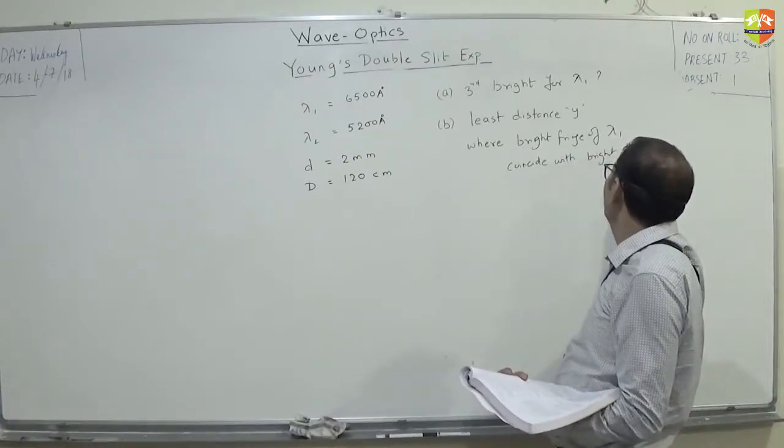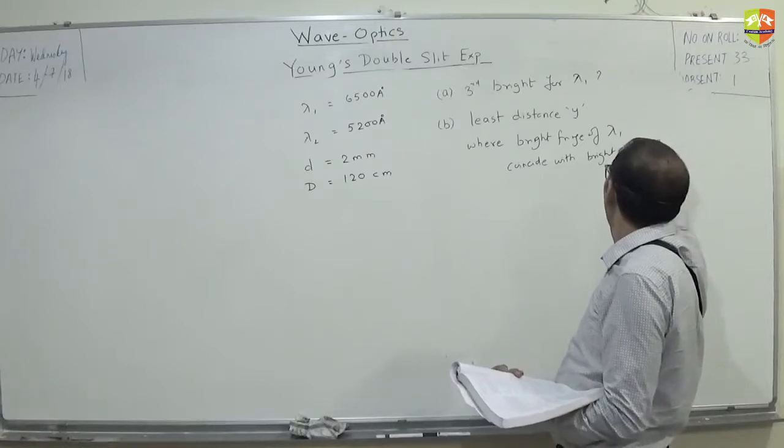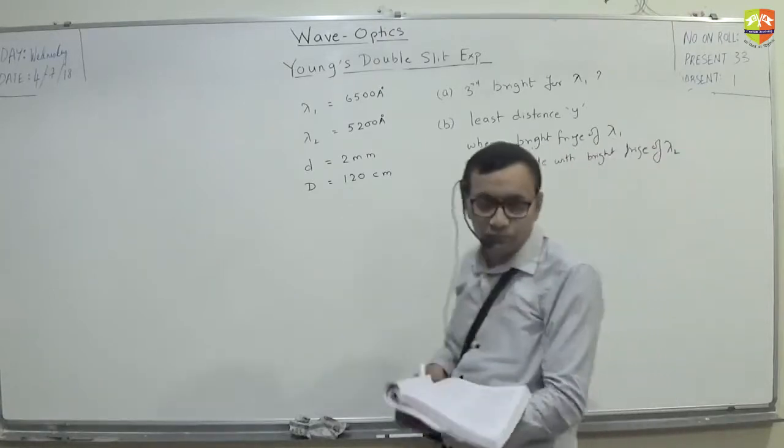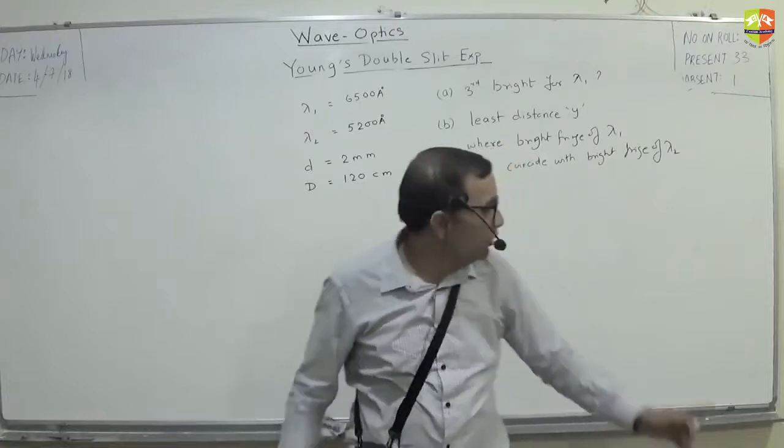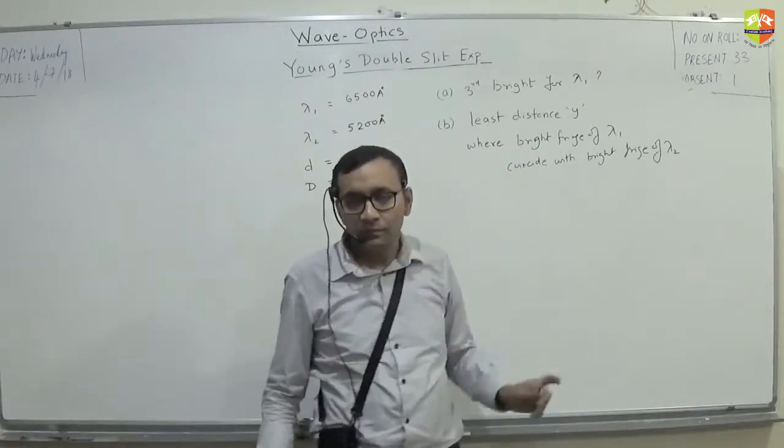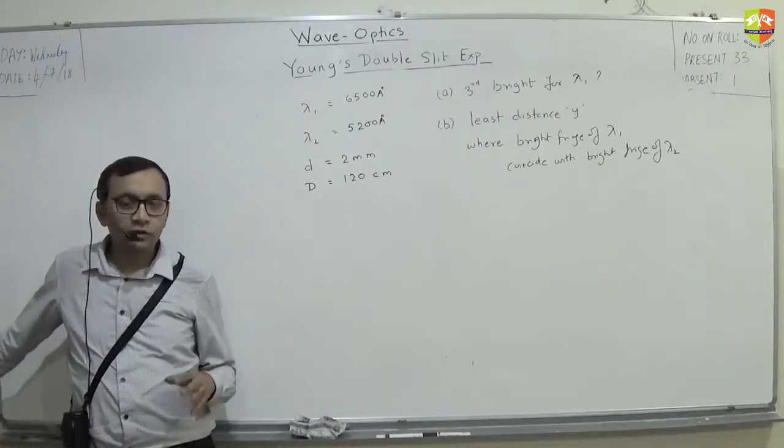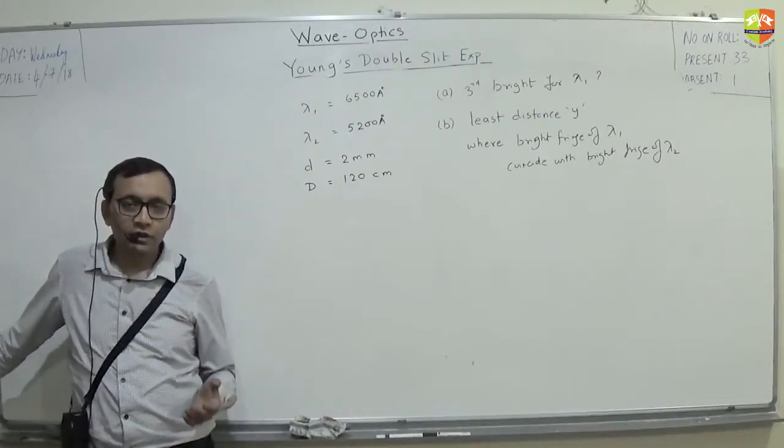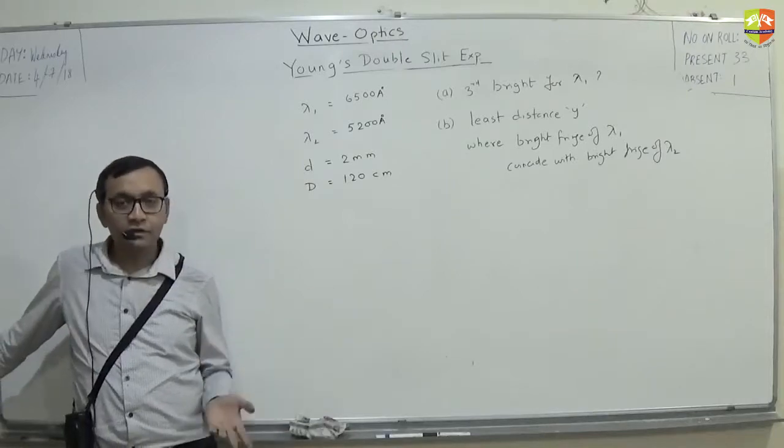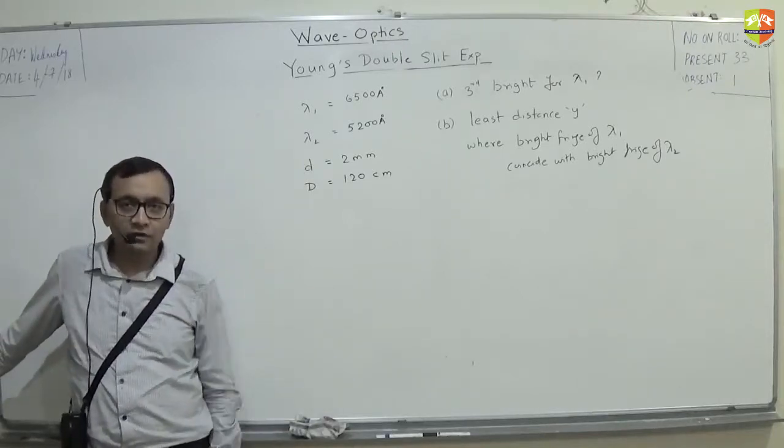Part B: Which bright fringe of lambda 1 coincide with bright fringe of lambda 2. Have you understood what is asked? Those who are watching the video, you can also feel as if the class is going on and you can try this. Don't watch it like a movie. Alright?